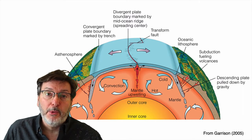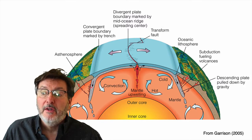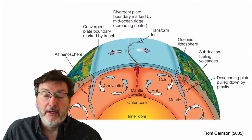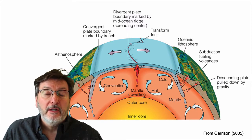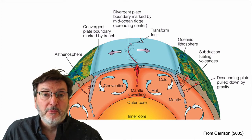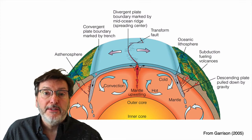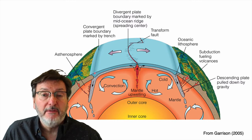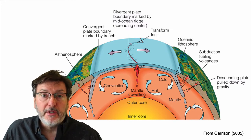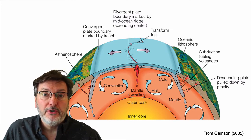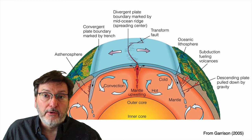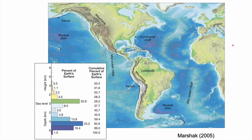So we have both forces operating: ridge push from uplift and slab pull from the down-going lithosphere becoming more dense and sinking back into the mantle. As I've mentioned, this difference in ocean crust-mantle and continental crust gives us the ocean basins.